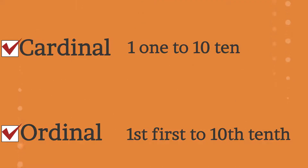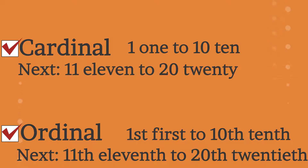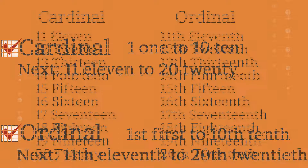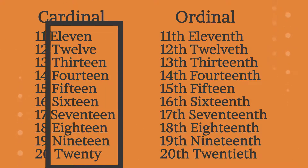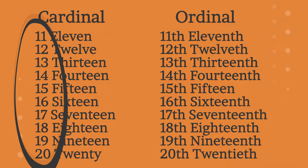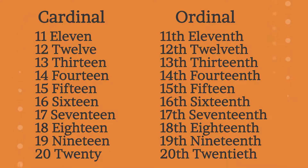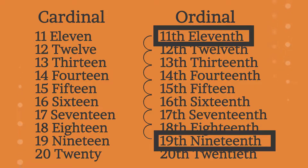We already know the numbers from 1 to 10. Now, let's see the numbers from 11 to 20. As you can see in the cardinal form, the numbers from 11 to 20 are only written in counting form. While in ordinal form, we already know if something is in 11th place or in 19th place.